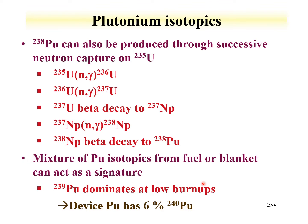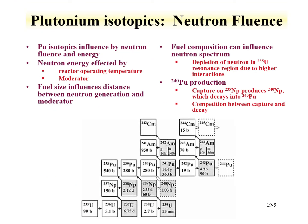A mixture of plutonium isotopics in fuel or blankets can act as a signature. The key point is that plutonium-239 dominates at low burn-ups, and weapons-grade plutonium has about 6% or less of plutonium-240. These are key signatures: if one were to interdict plutonium material with relatively low amounts of Pu-240, that is a strong indication that it was intended for a device. Relatively high amounts of plutonium-240 indicate it likely came from a typical commercial reactor.